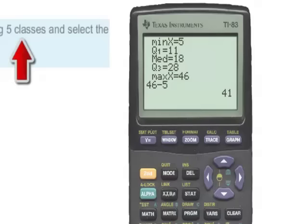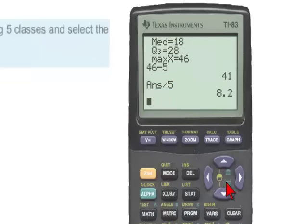which in our case is 5. So we will hit divide by and then 5 and hit enter. And we see that our range divided by 5 or the range divided by the number of classes gives 8.2. And we will round this up to 9.